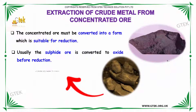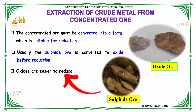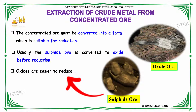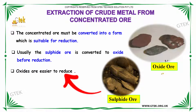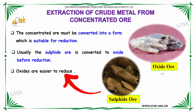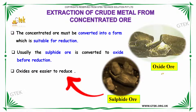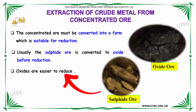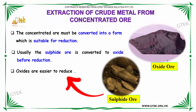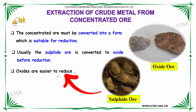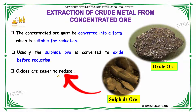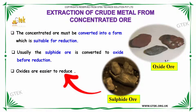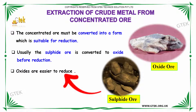Extraction. The concentrated ore must be converted into a form which is suitable for reduction. Usually, the sulphide ore is converted to oxide before reduction. And you know it that oxides are easier to reduce. Here is the oxide ore and here is the sulphide ore.